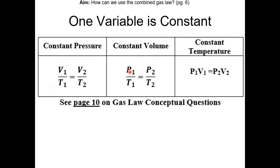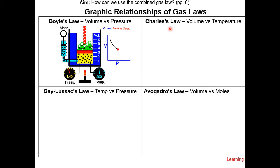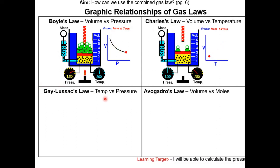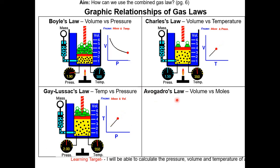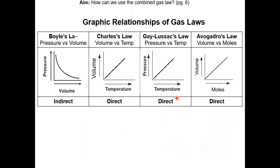Here are the graphs of the gas law relationships: Boyle's law — volume versus pressure; Charles' law — volume versus temperature; Gay-Lussac's law — temperature versus pressure; Avogadro's law — volume versus moles. Make sure you're able to recognize these graphs on the Regents.